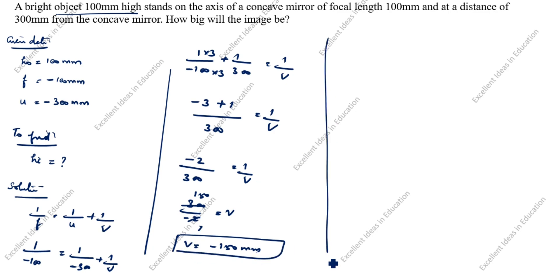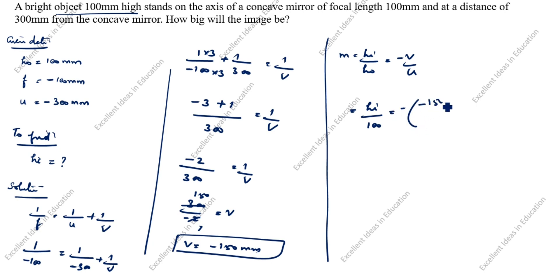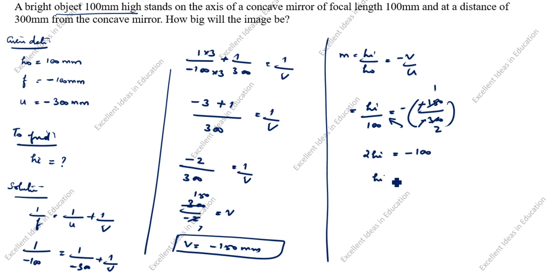Next, we will find HI. M is equal to HI by HO, which is equal to minus V by U. HI we need to find. HO value is given as 100, equal to minus of V value minus 150, divided by U value minus 300. The minus-minus cancel. This is 1 times, this is 2 times. Cross multiply: 2 HI equal to minus 100. HI is equal to minus 100 divided by 2, equal to minus 50. So HI is minus 50 mm.